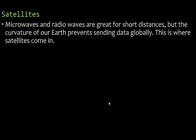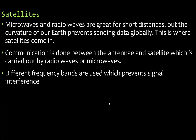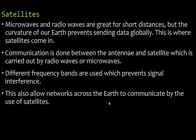Microwaves and radio waves are great for short distances but the curvature of the earth prevents sending data globally — this is where satellites come in. Communication is done between the antenna and satellite, carried out by radio waves or microwaves. Different frequency bands are used to prevent signal interference and also allow networks across the earth to communicate by use of satellites.